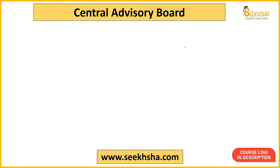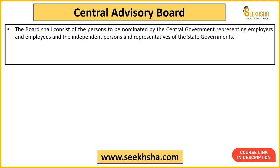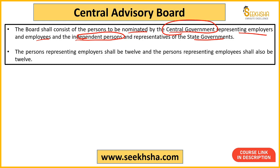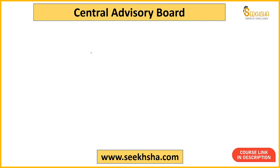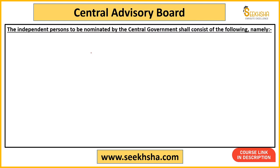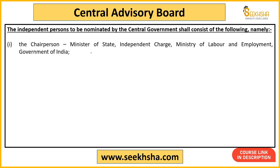Let us quickly start with the Central Advisory Board. The central government will constitute this board. It includes four categories of members: employer representatives, employee representatives, independent persons, and state government representatives. There will be 12 employer representatives and 12 employee representatives — equal numbers on both sides.